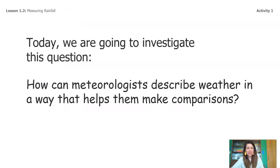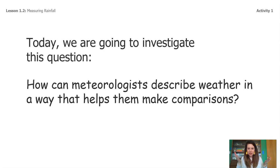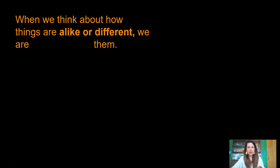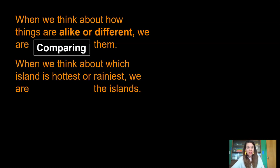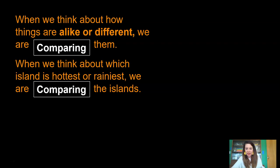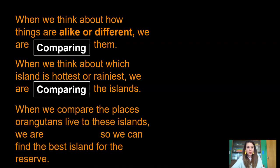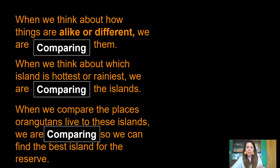Today we're going to investigate this question: how can meteorologists describe weather in a way that helps them make comparisons? Do you remember what a comparison is? When we think about how things are alike or different, we are comparing them. When we think about which island is hottest or rainiest, we are comparing the islands. And when we compare the places orangutans live to these islands, we are comparing to find the best island for the reserve.